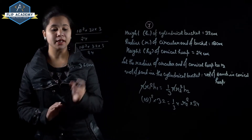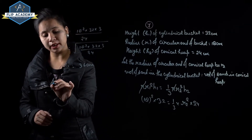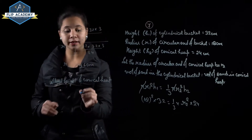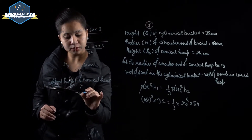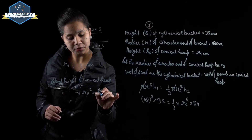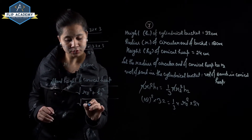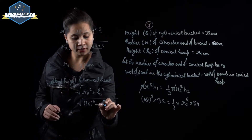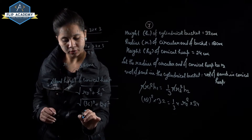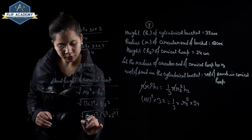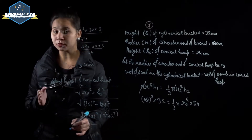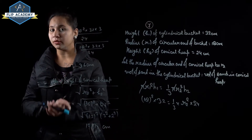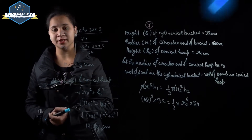Now find the slant height of the conical heap: l = √(r2² + h2²) = √(36² + 24²) = √(1296 + 576). Taking out 12² as common: l = 12√(9 + 4) = 12√13 cm. Question number 7 is complete.